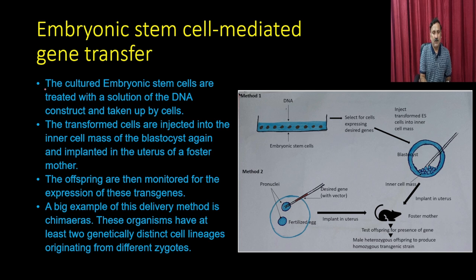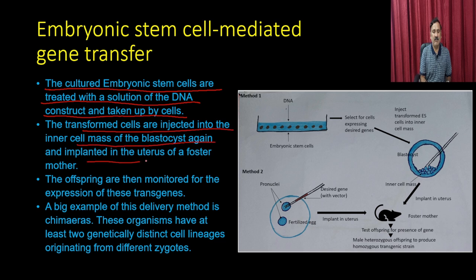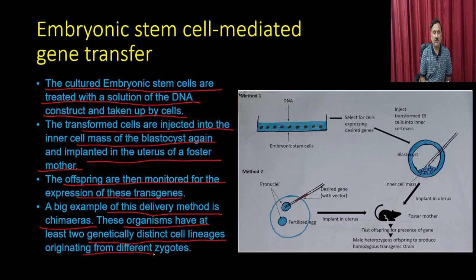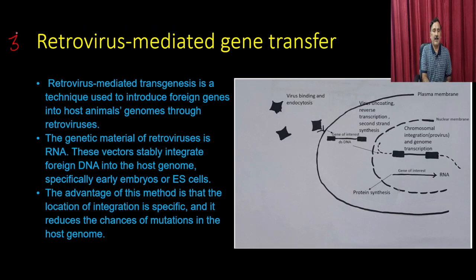Cultured embryonic stem cells are treated with a DNA construct solution and taken up by the cell. The transformed cells are injected into the inner cell mass of the blastocyst and implanted in the uterus of a foster mother. The offsprings are then monitored for expression of the transgenes. A key example of organisms produced by this delivery method is chimeras — organisms having at least two genetically distinct cell lineages originating from different zygotes.